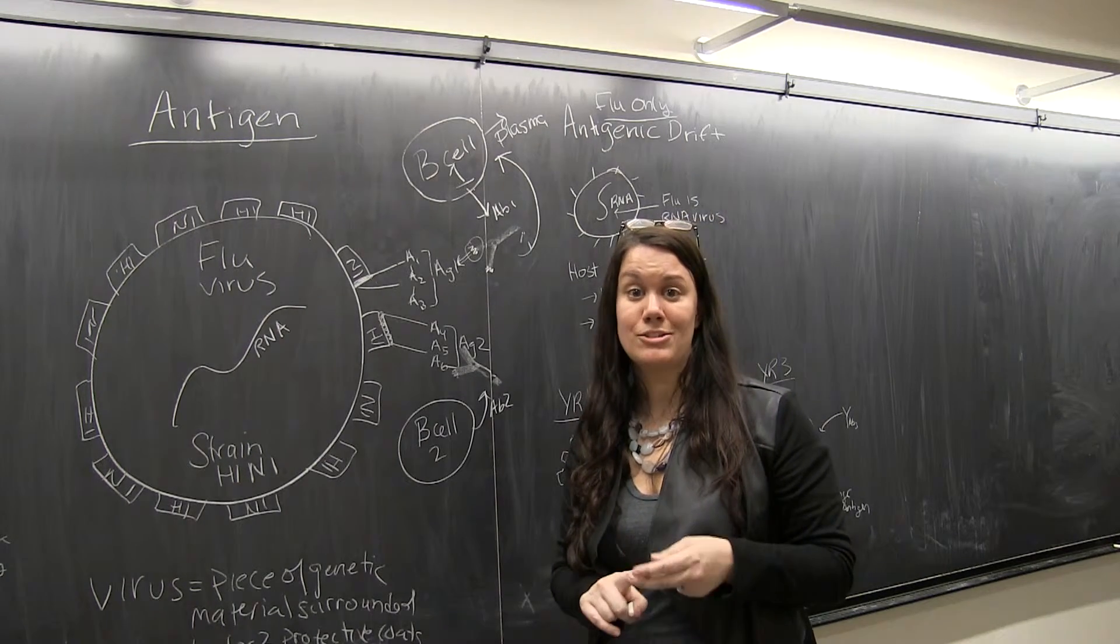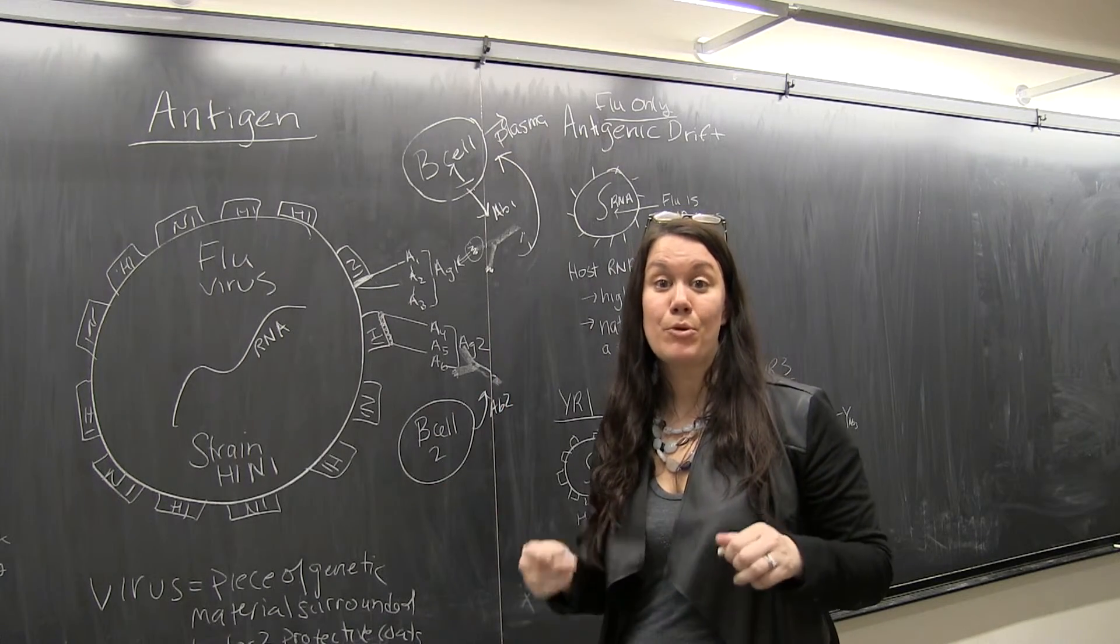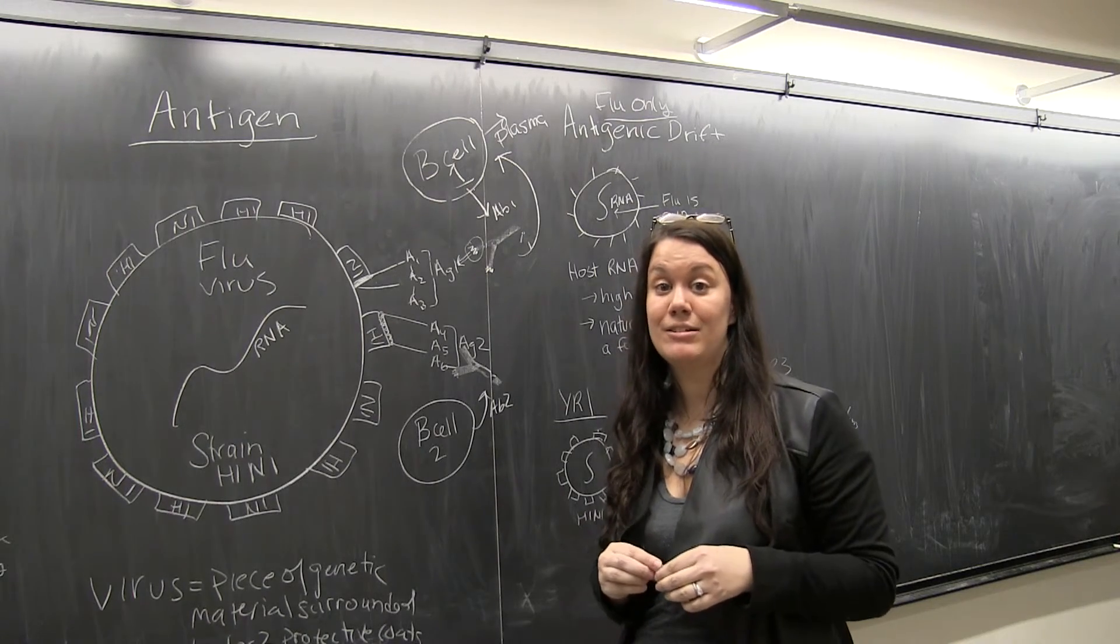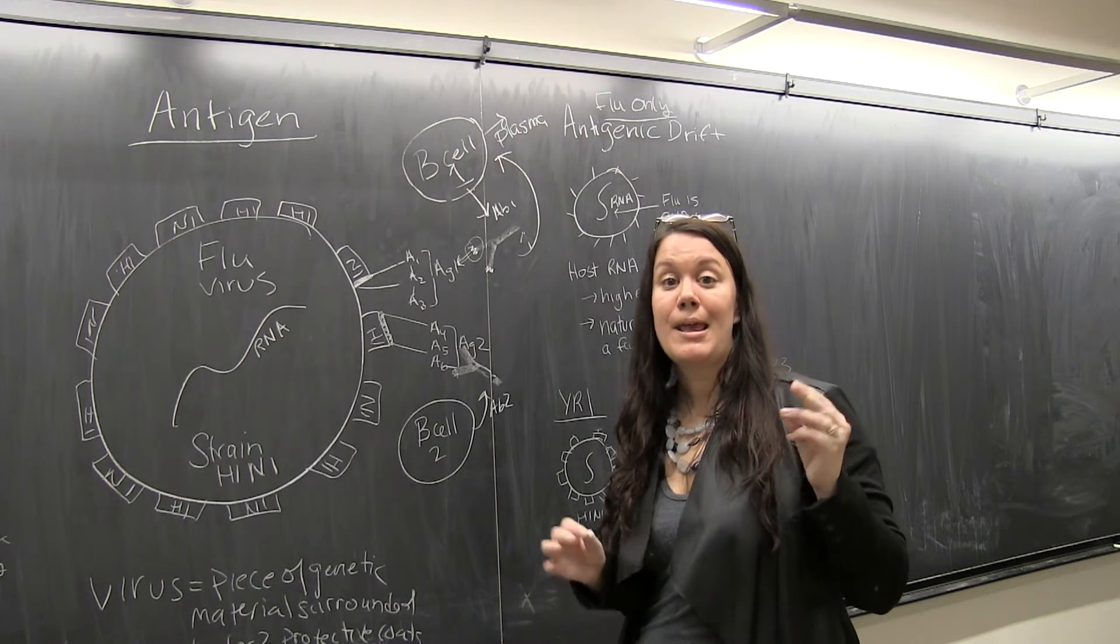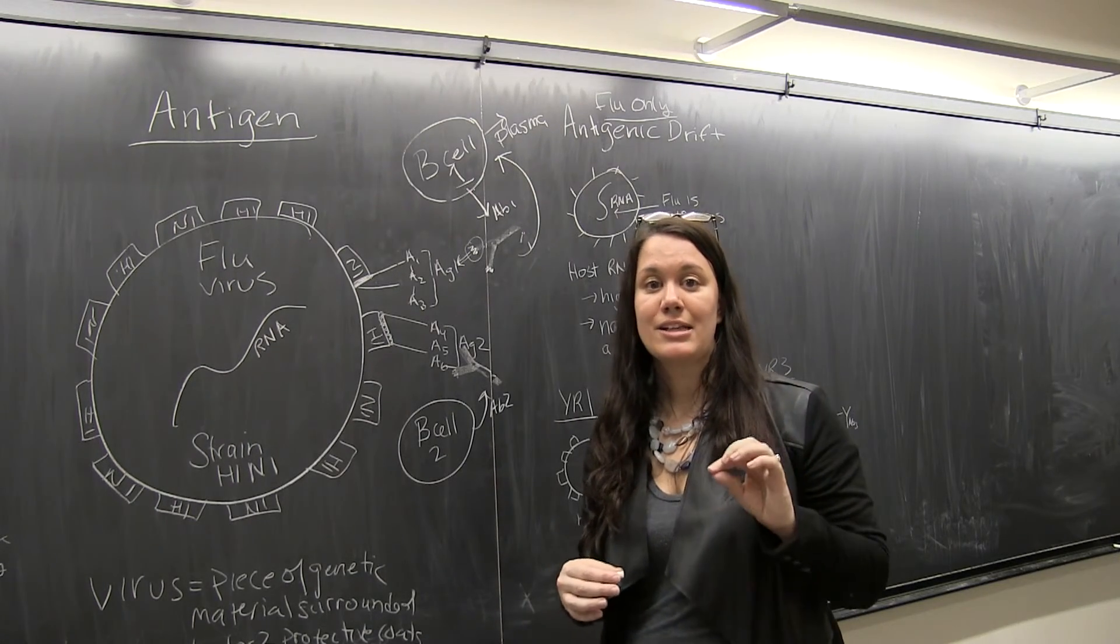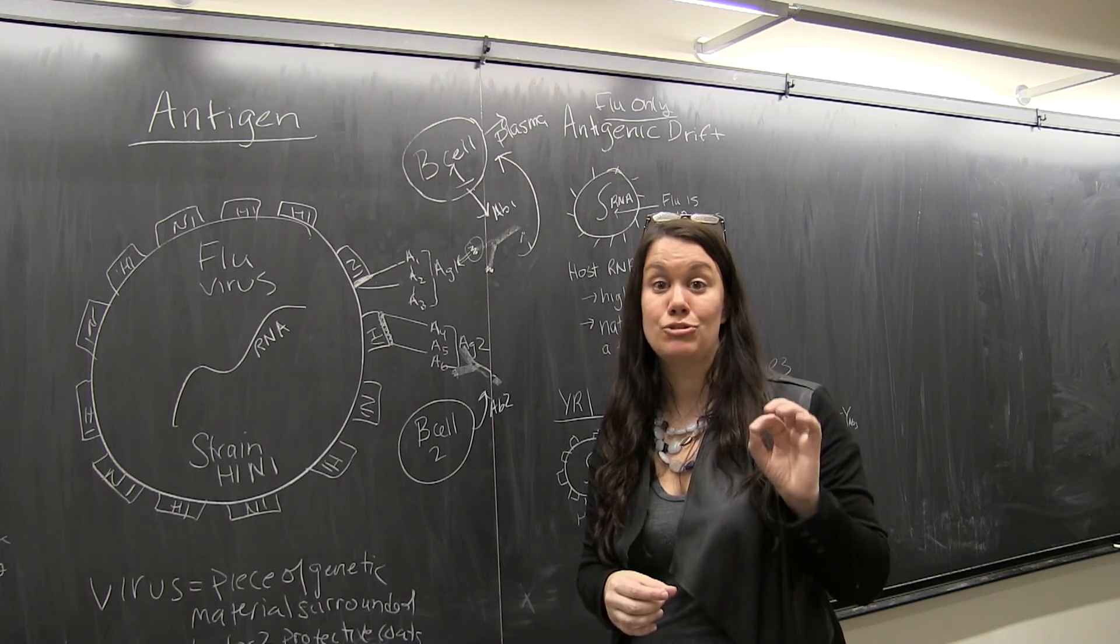Two, it's a signal back to B cells to make more of that antibody and also specialize into plasma cells. And then three, it blocks the virus from entering into cells. So next we're going to go over a specific flu concept, which is antigenic drift.